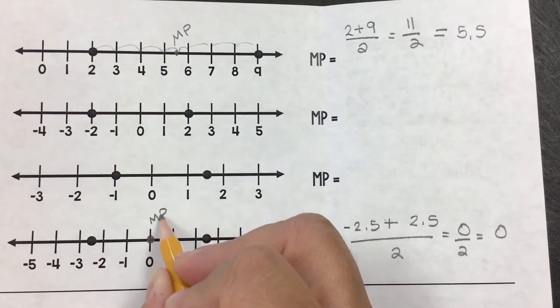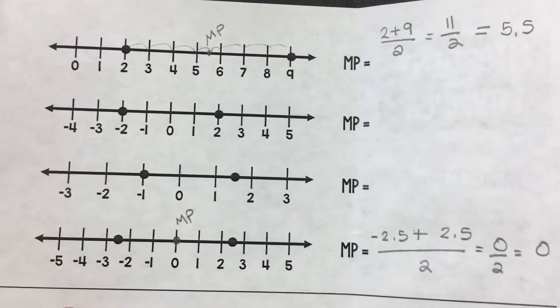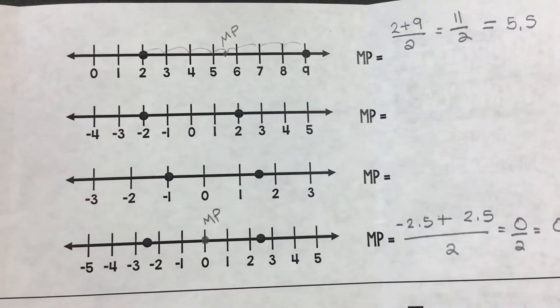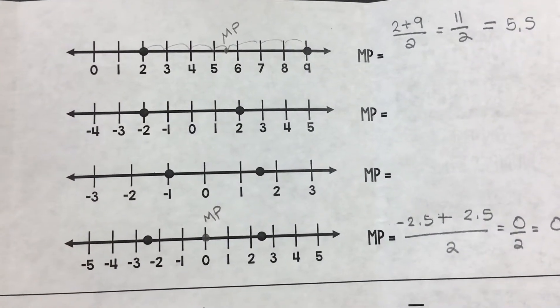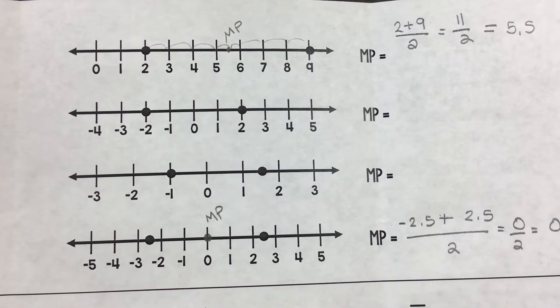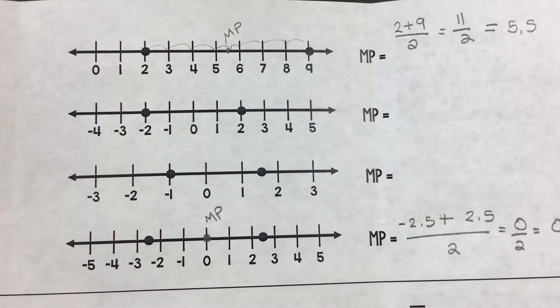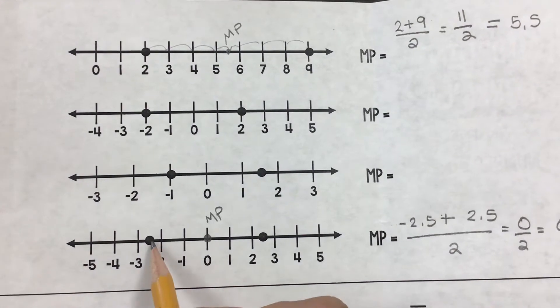Making 0 our midpoint. Make sure you write 'midpoint' so I can tell that number refers to that point right there. This one is a little bit harder to check.